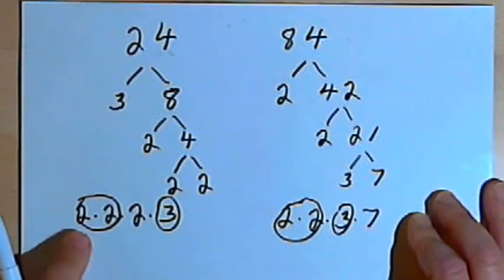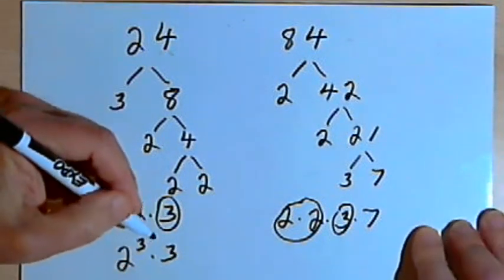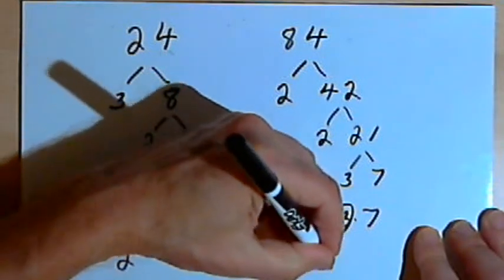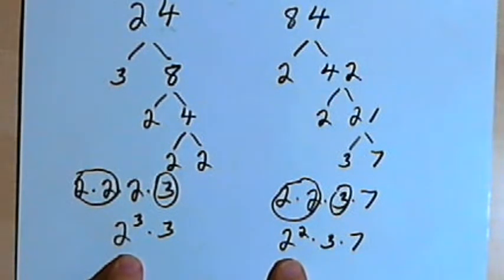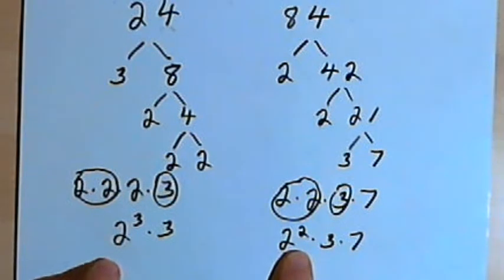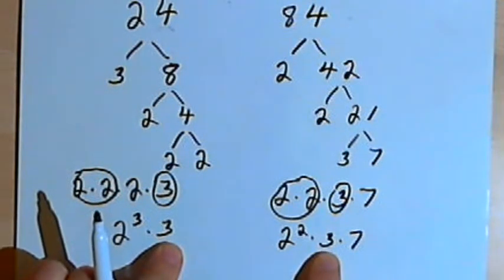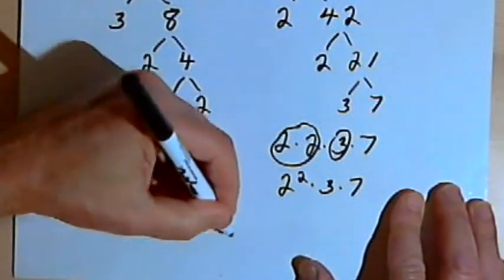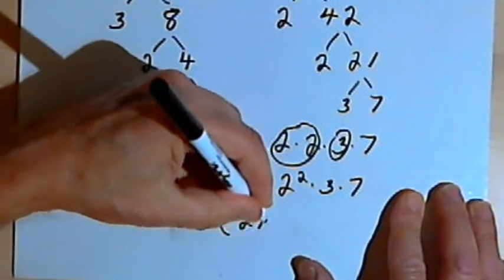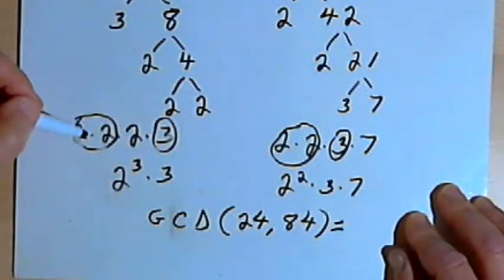If I had written the factorization for 24 as 2 to the 3rd times 3, and for 84 as 2 squared times 3 times 7, then looking for the greatest common divisor, 2 to the 3rd is three 2s and 2 squared is two 2s, so the most I can take out is 2 squared, as well as the 3. So GCD(24, 84) = 2 times 2 times 3, which is 12.